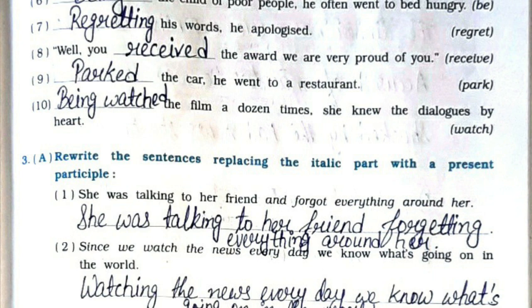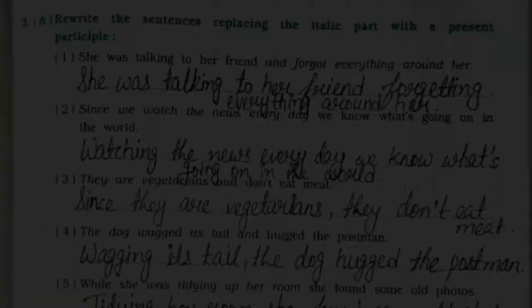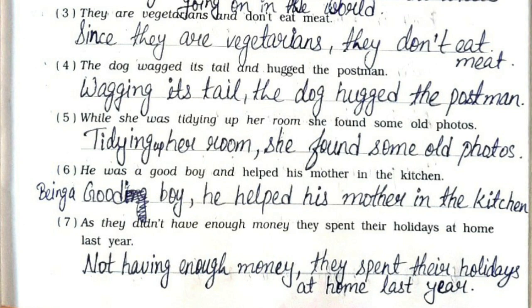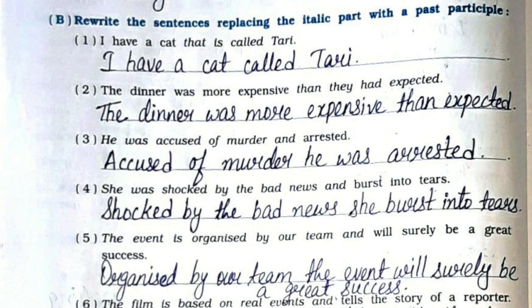Question Three A: Rewrite the sentences replacing the italic part with the present participle. Answers: She was talking to her friend, forgetting everything around her. Watching the news every day, we know what's going on in the world. Since they are vegetarians, they don't eat meat. Wagging his tail, the dog hugged the postman. Tidying up her room, she found some old photos. Being a good boy, he helped his mother in the kitchen. Not having enough money, they spent their holidays at home. Putting on a new dress, she felt greatly proud. Not feeling well, I didn't go to the cinema. Walking home, she met an old friend.